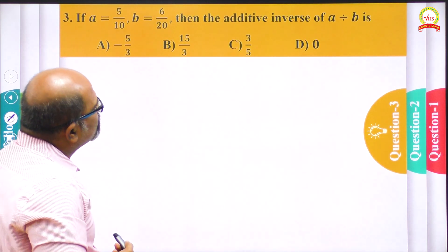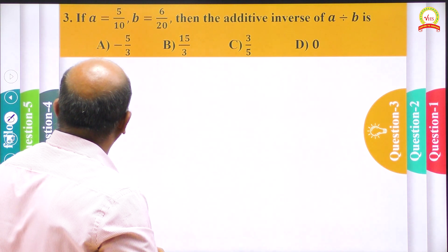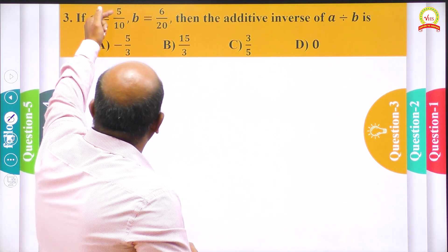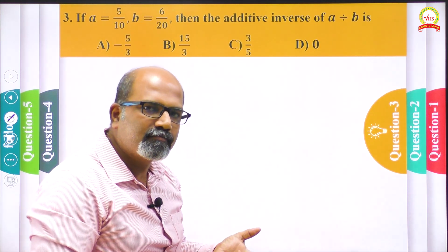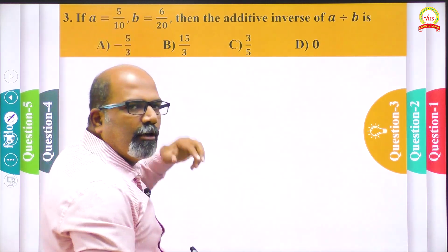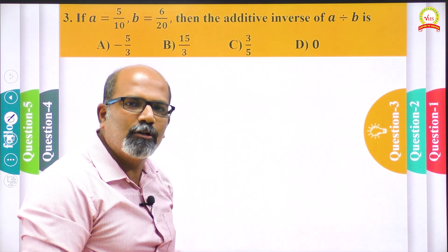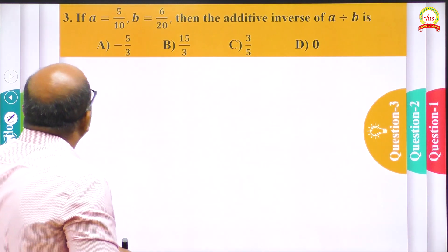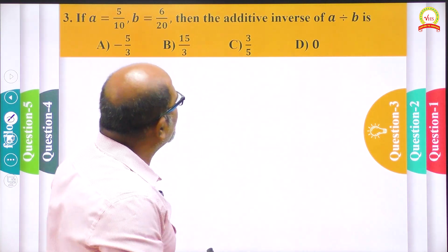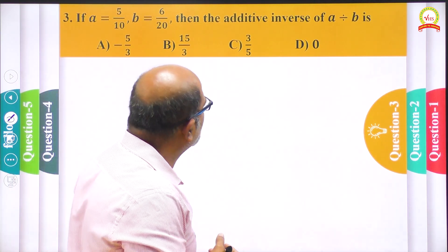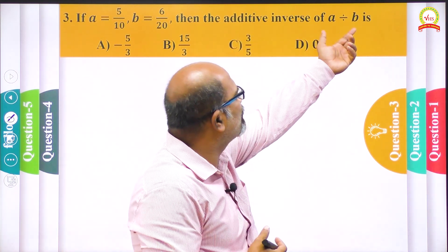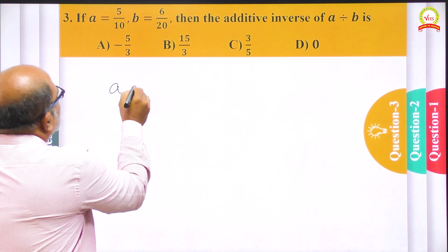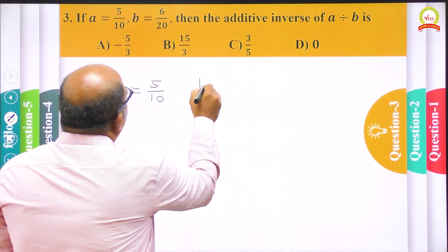Now moving to question number 3. The value of a = 5/10 and b = 6/20. When I look at the question, I can identify that 5/10 and 6/20 are not in standard form — 5/10 has a common factor between numerator and denominator, and 6/20 also has common factor 2. So we can simplify them. The question asks for the additive inverse of a divided by b, similar to the previous question.